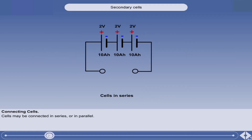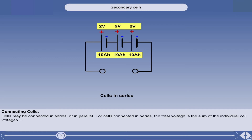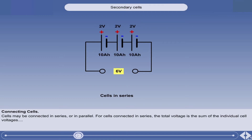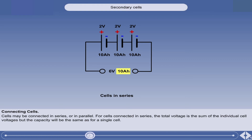For cells connected in series, the positive terminal of one cell is connected to the negative terminal of the next, and so on. The total voltage is the sum of the individual cell voltages. So, for instance, if three 2 volt cells, each with a capacity of 10 ampere hours, are joined in series, they will produce a voltage of 6 volts. But the capacity will be the same as for a single cell — in this case, 10 ampere hours.